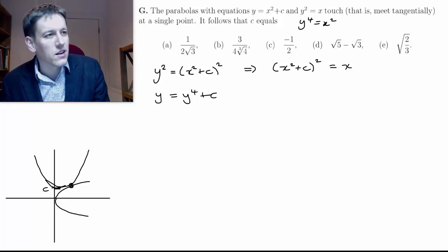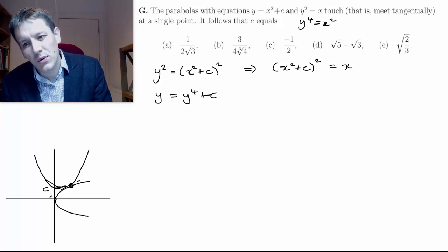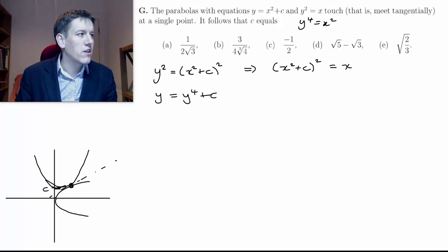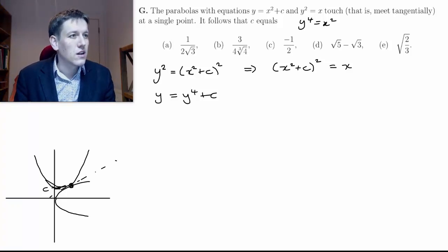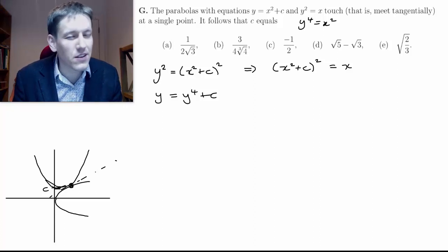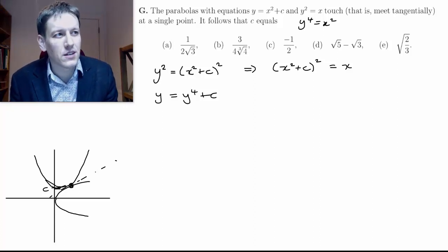At this point here, because they meet tangentially, not only do they intersect, but at this point they're going to share a tangent. And sharing a tangent means that their gradient at that point is going to be equal.